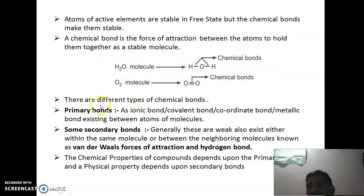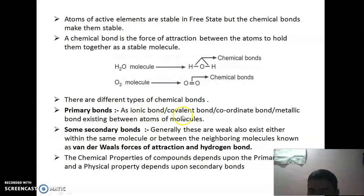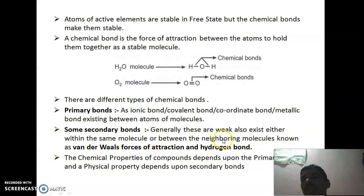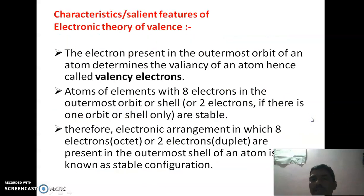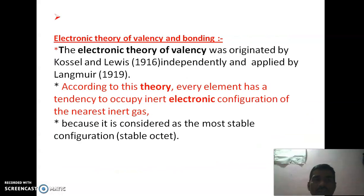Chemical bonds are of two types: primary bonds and secondary bonds. Primary bonds include ionic bonds, covalent bonds, coordinate bonds, and metallic bonds. Secondary bonds are generally weak bonds that exist within the same molecule or between neighboring molecules, known as van der Waals forces of attraction and hydrogen bonds. The chemical properties of compounds depend on primary bonds, and physical properties depend on secondary bonds.